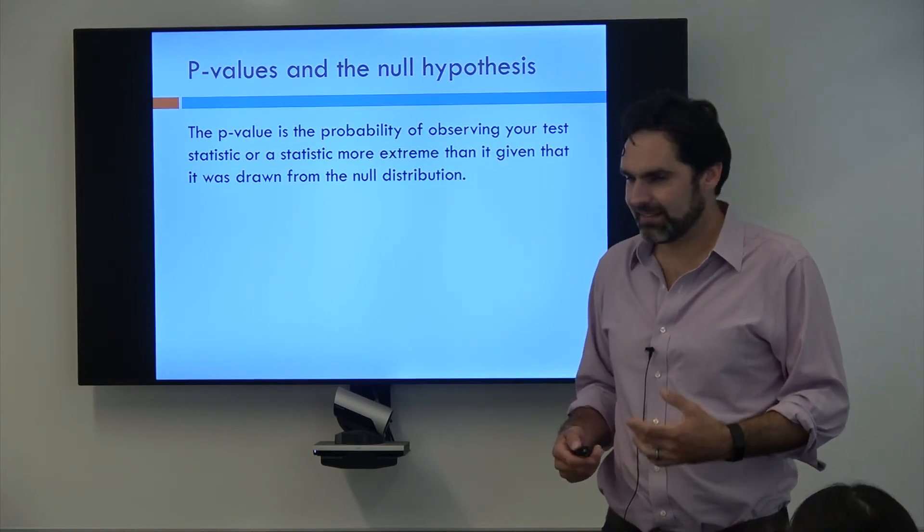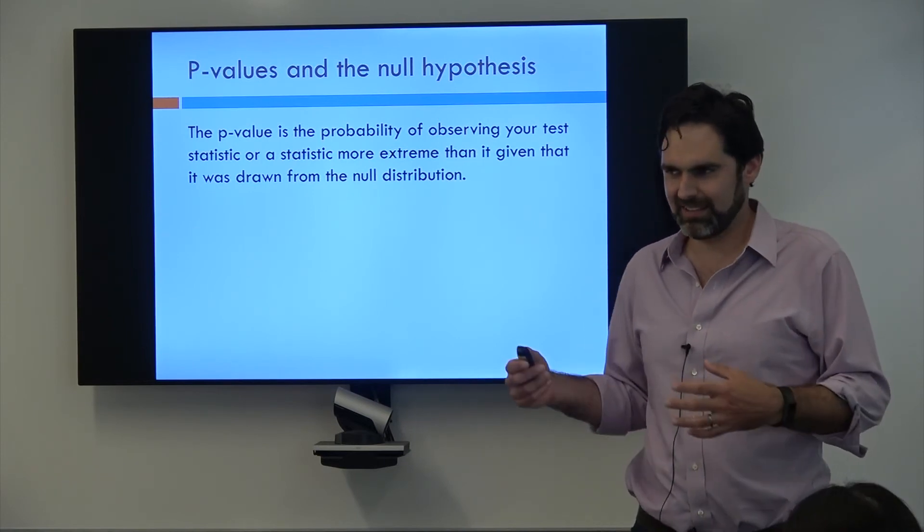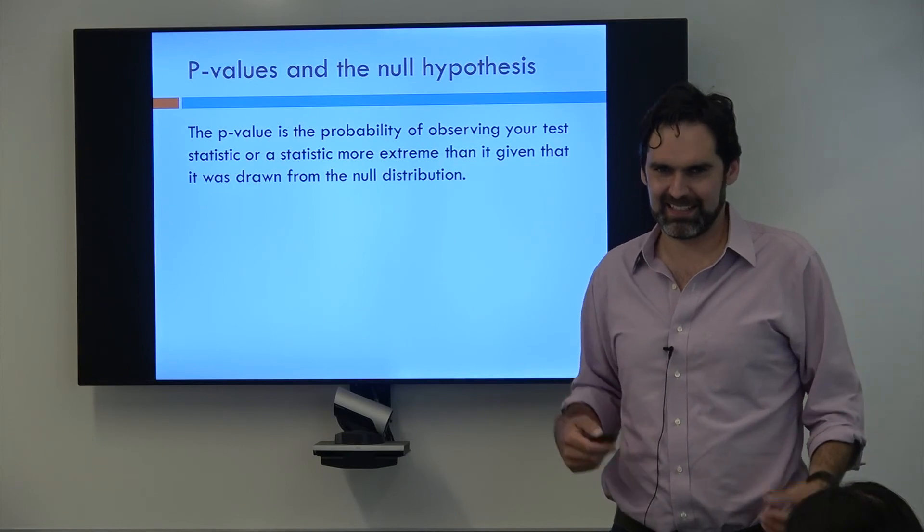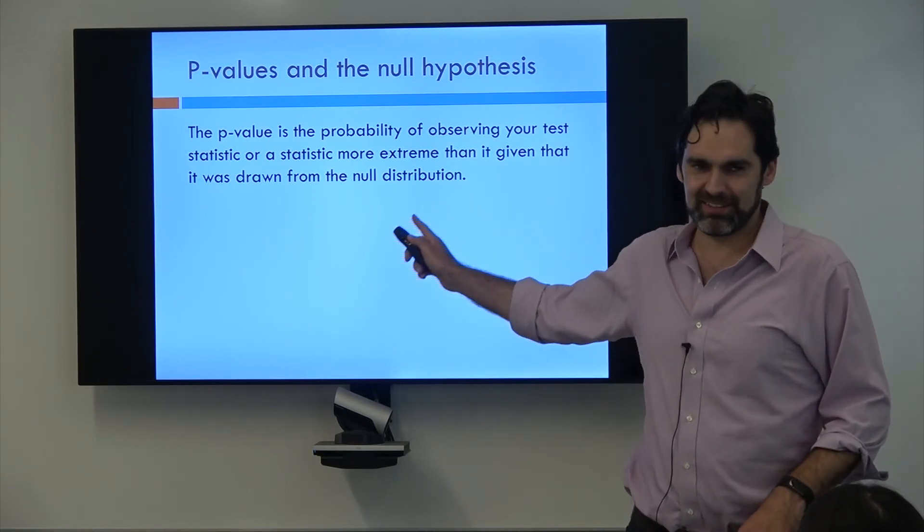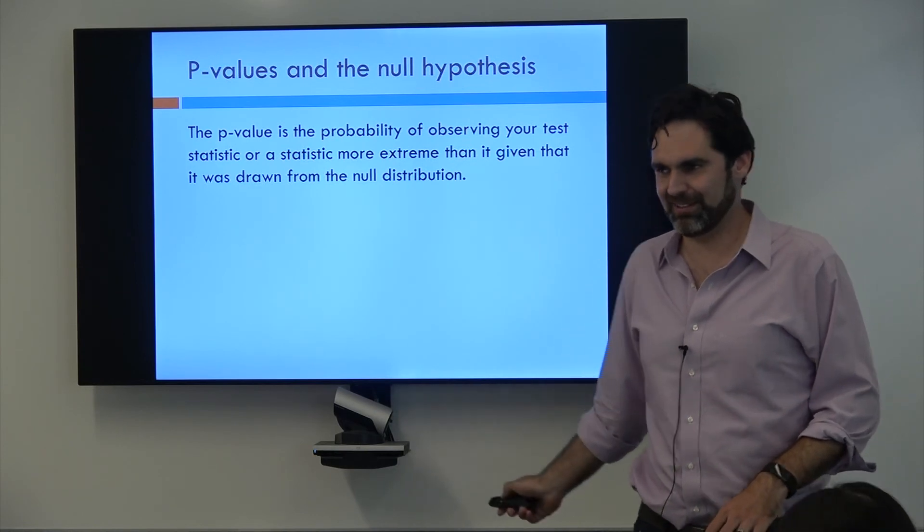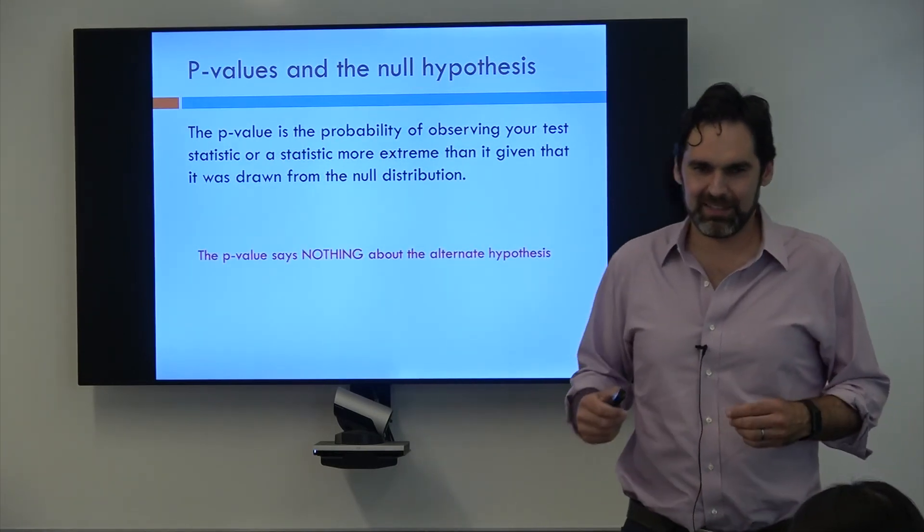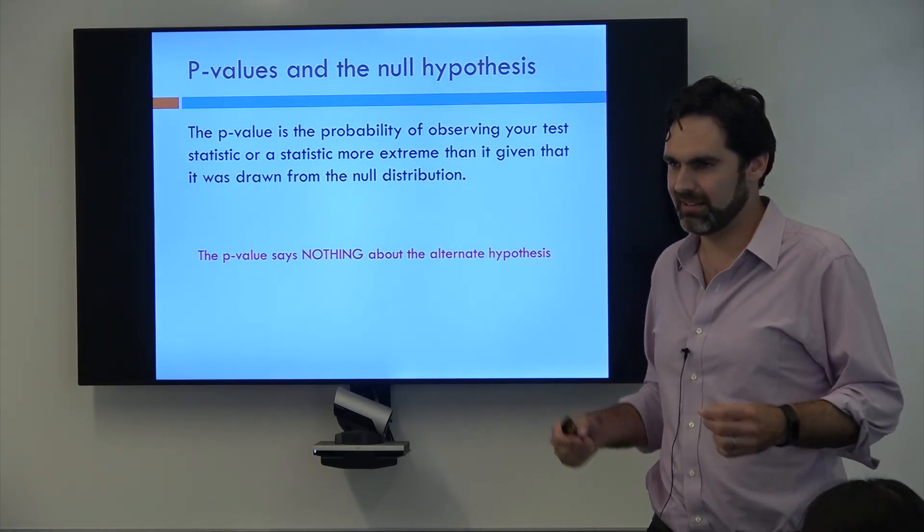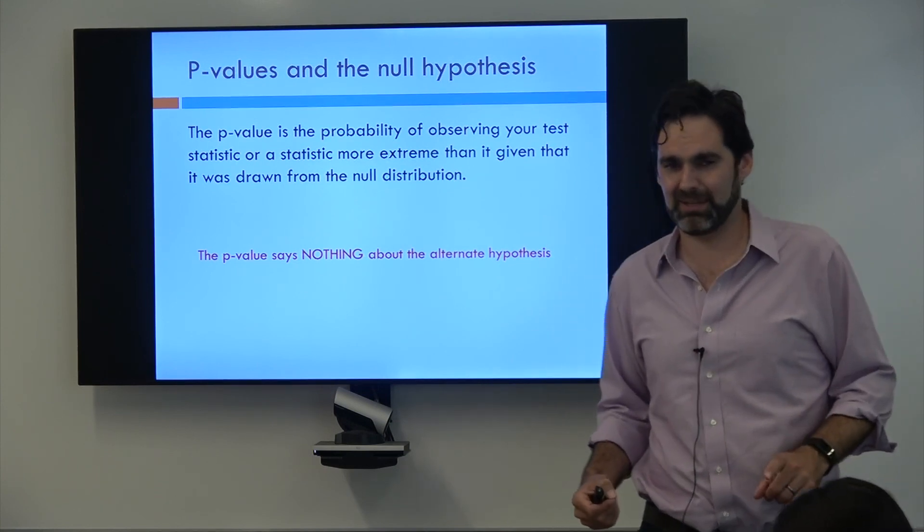Now who here, if they were asked about a p-value, would say something like, it's the number and if it's less than 0.05, you reject it in terms of the alternate. Like that sounds like a p-value? Yeah. This definition, you know what it says nothing about? The alternate hypothesis. So your p-value only tells you about the probability of observing your data under the null hypothesis. It tells you nothing about what the alternate hypothesis is.